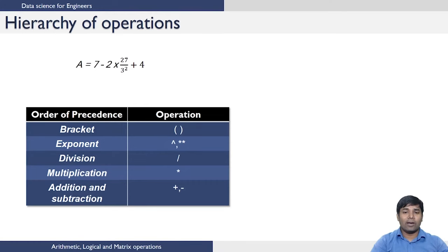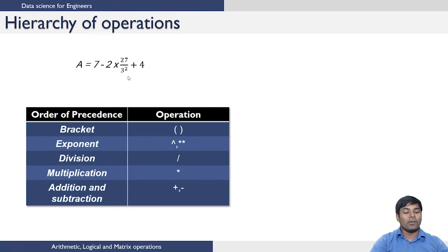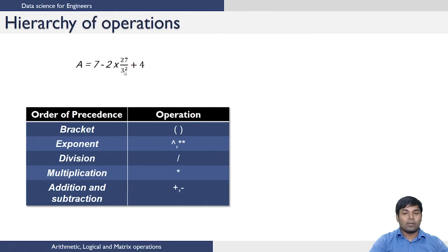Let us look at the hierarchy of operations while performing arithmetic operations in R. It is similar to the normal BODMAS rule, with brackets having first importance. Exponent has the second priority, followed by division, multiplication, addition and subtraction. For your understanding you can type in this expression and see what the value of a would be. First, 3 squared is evaluated as 9, then 27 divided by 9 gives 3, then 3 times 2 is 6, then 6 minus 6 because of the minus 1, and 7 plus 4 is 11 minus 6, which gives the value of a as 5.